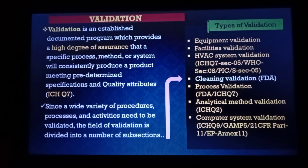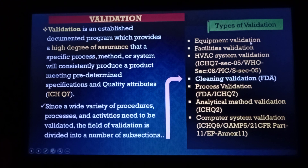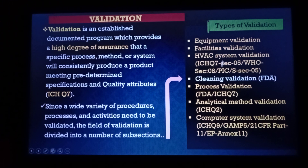There are a number of procedures and activities to be validated in the manufacturing industry. This validation is divided into a number of subsections — types of validation: equipment validation, facilities validation, heating ventilation and air conditioning system validation regarding clean rooms of the pharmaceutical industry, cleaning validation, process validation, analytical method validation, and computer system validation. These are the major validation activities, and today we will cover cleaning validation.